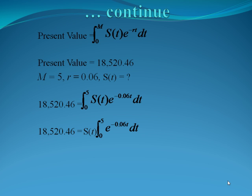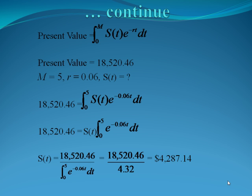That's really convenient because now we can divide both sides by the value of our integral. So our income stream can be calculated by dividing the present value of $18,520.46 by the number we get by calculating our integral in our calculator. When you plug that integral in, you should get 4.32. By dividing, we get our final income stream of $4,287.14. That's how much we have to invest every month to get what we wanted in the original problem.